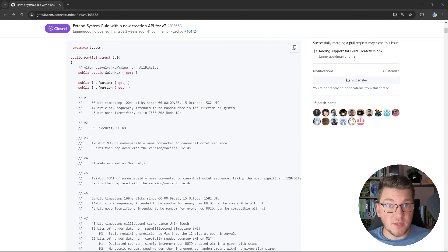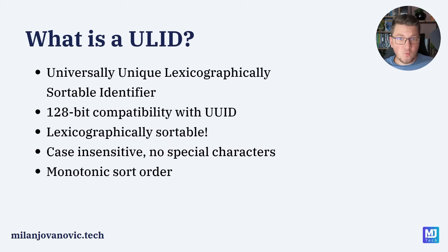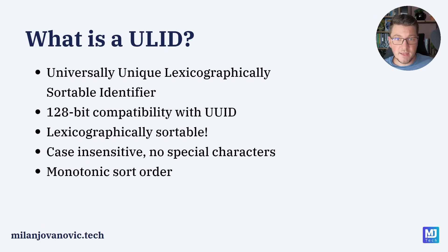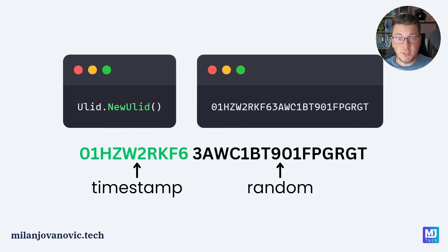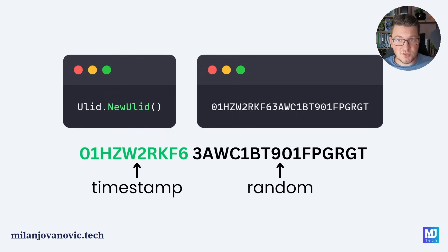But what if you wanted to solve this problem today? This is why I wanted to introduce you to a new data structure called a ULID. ULID stands for Universally Unique Lexicographically Sortable Identifier. It's also 128 bits long, so it's compatible with a UUID for data storage. It's lexicographically sortable, meaning both the string and bitwise representation are sortable. The string representation is case insensitive with no special characters, so it's URL friendly. The main benefit is a monotonic sort order. The first 10 characters of the ULID represent a timestamp value, similar to the version 7 UUID, and the remaining characters are random values which guarantee uniqueness.